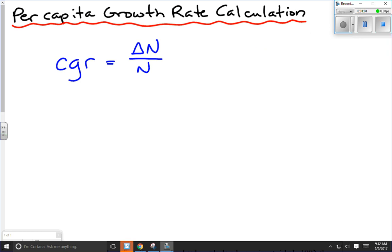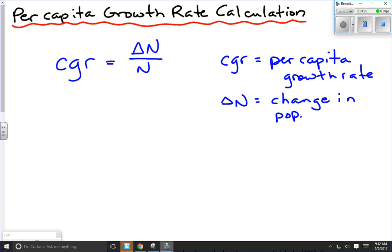What we want to do is per capita growth rate. CGR is the per capita growth rate. Per capita means per individual. What we need to know to calculate that is the change in the population size. We use N for this because N just means number, change in the population number or change in the population size. And N is equal to the original population, what the population was before any change happened.